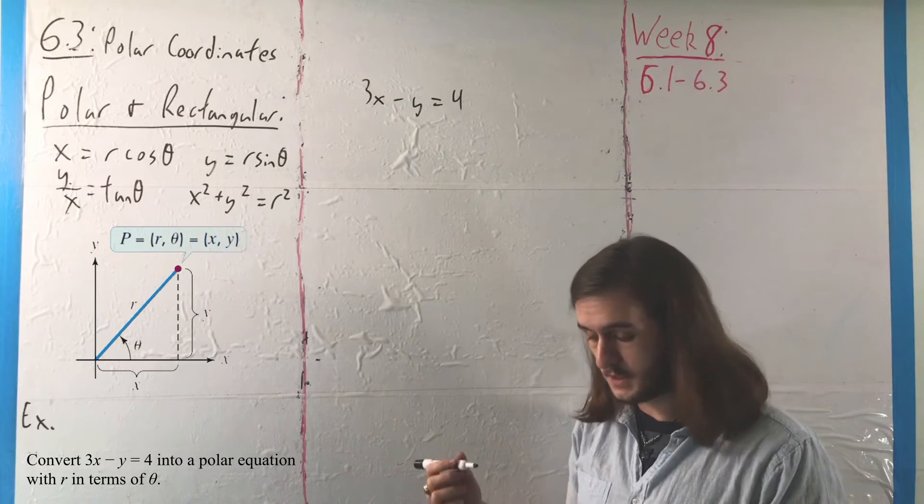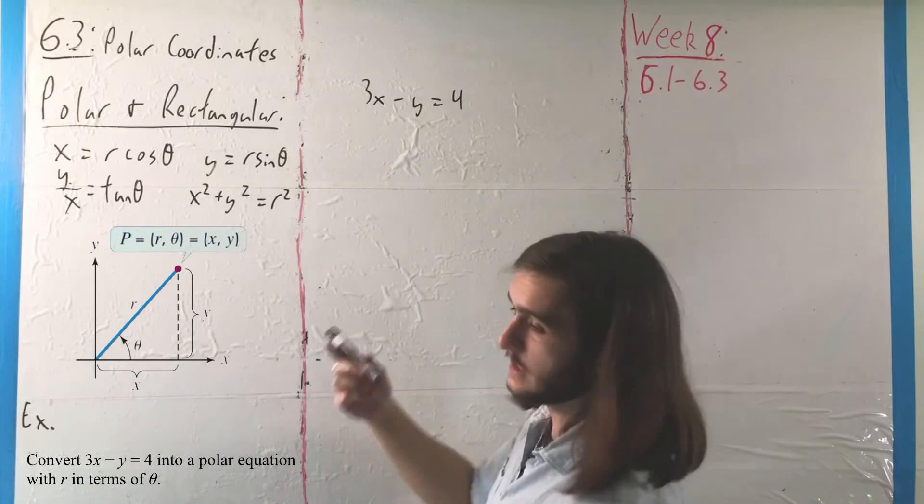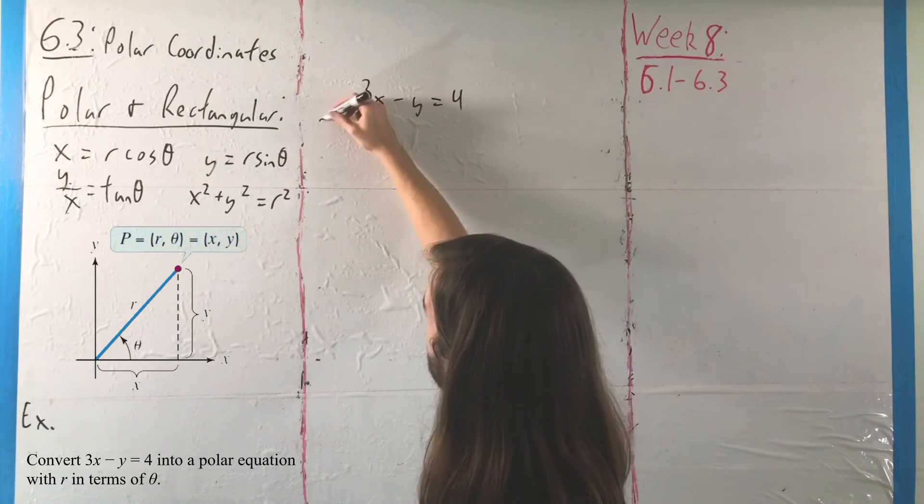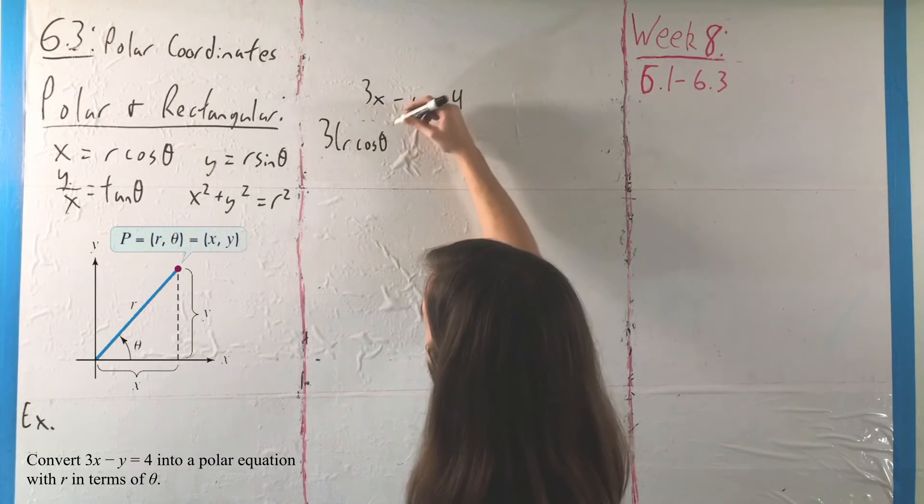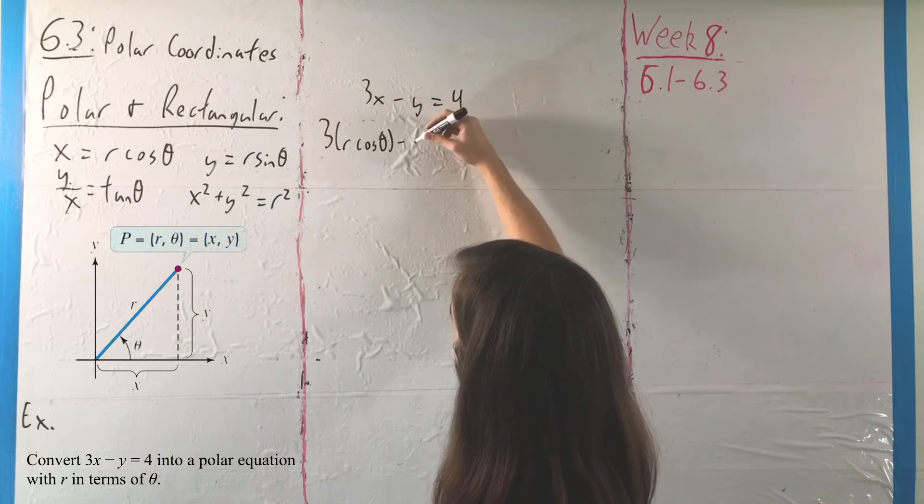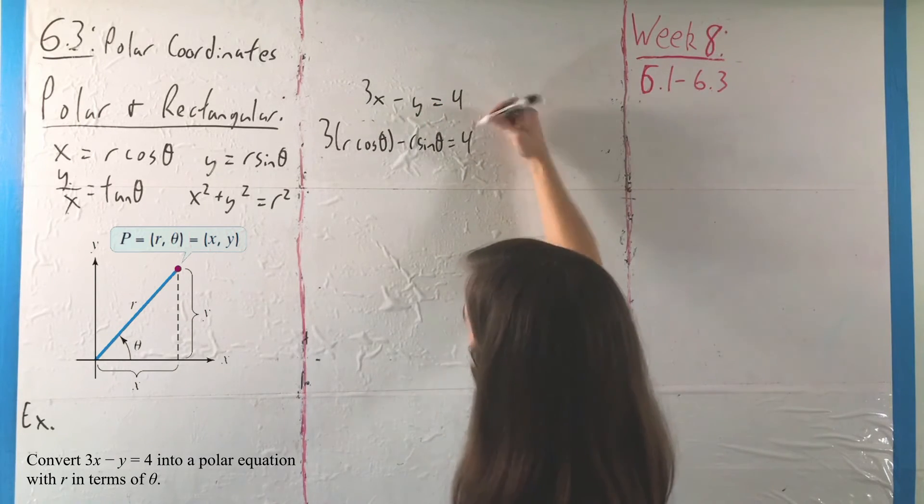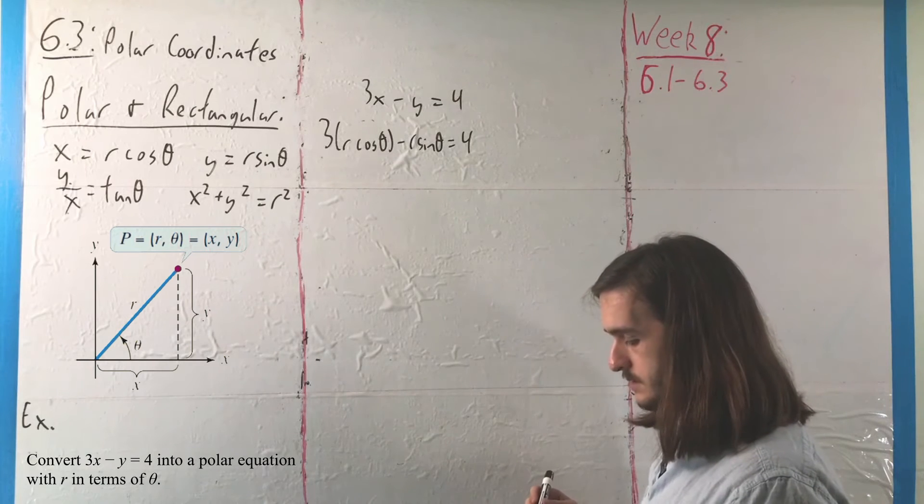So we have 3x minus y equals 4. Well, we'll just put this in terms of R cosine and R sine, like we did with the long version of that other one. Now, we'll have 3 times R cosine of theta minus R sine of theta equals 4.